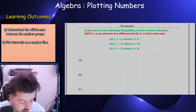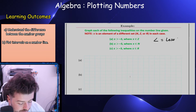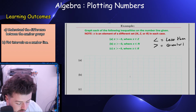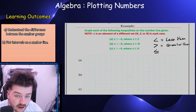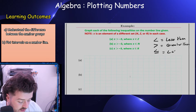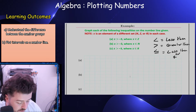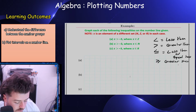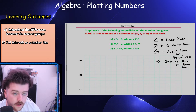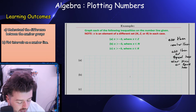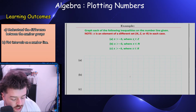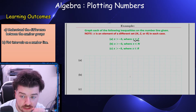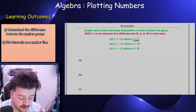Now here's how we plot an inequality. Remember your inequality signs: the one that looks like an L means less than, the other means greater than, and with a little line underneath it's less than or equal to, or greater than or equal to. When plotting, we always first check which set x belongs to. For example: x is greater than minus three, x is an element of integers.